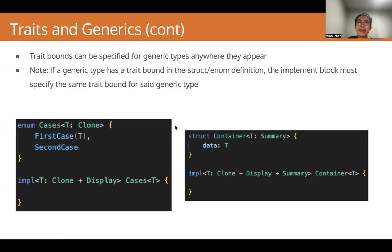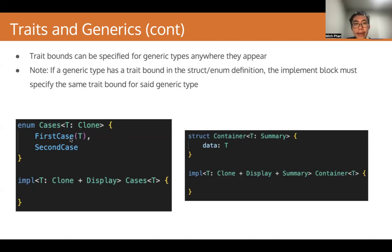Trait bounds can be specified for generic types anywhere they appear — in struct signatures, enum signatures, and implementation blocks. On the left, you have an example of a trait bound in an enum signature. You have an enum Cases with two cases, FirstCase and SecondCase. FirstCase contains some generic type T, and we want T to be cloneable, so we put Clone in the trait bound for T. Then we have an implementation block for Cases where we can also use trait bounds — this time T has Clone and Display, suppose we want to print T.